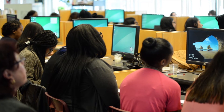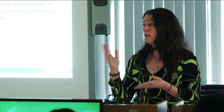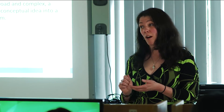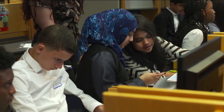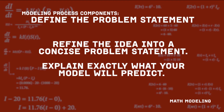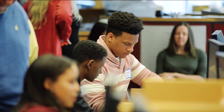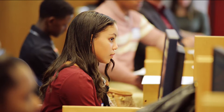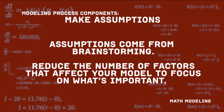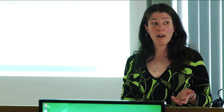We're going to go through these components of the modeling process together. There are no wrong answers when you're brainstorming — even the craziest ideas should be written down, because they may be called innovative later. Begin by refining the idea into a concise problem statement explaining exactly what your model will predict. Think about the situation: what influences this problem?